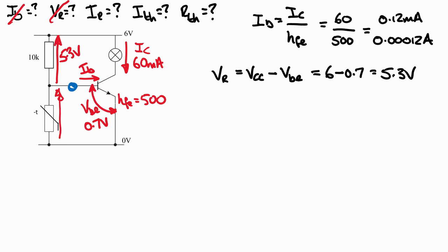For the current through that resistor, now that we've got the voltage and resistance, it's just a case of using Ohm's law. The current is the voltage dropped across the resistor divided by the resistance, so 5.3 volts divided by 10,000 because it's 10k.